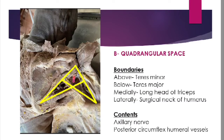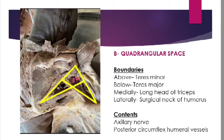Next, B is the quadrangular space. The boundaries are: above, from before backwards — subscapularis muscle, the lower part of the capsule of the shoulder joint, and teres minor; below — teres major; medially — the long head of triceps; and laterally — the surgical neck of the humerus. The structures passing through this space are the axillary nerve and posterior circumflex humeral vessels, which wind around the surgical neck of the humerus.